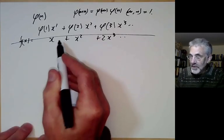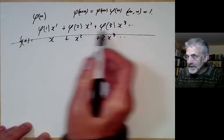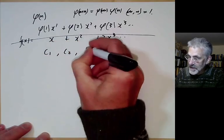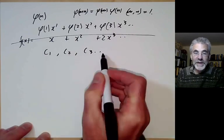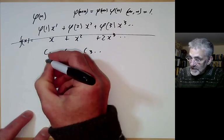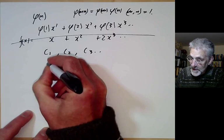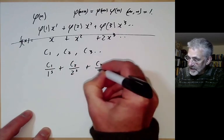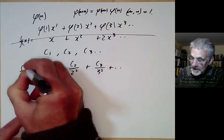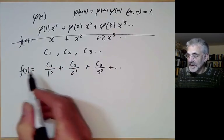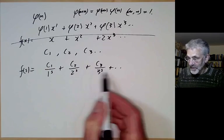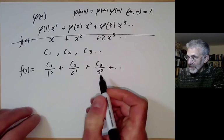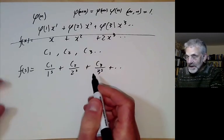However, power series are not the only form of generating function. We can form a Dirichlet series. If we've got a sequence c1, c2, c3, …, instead of forming a power series, it often turns out to be a good idea to form the series c1/1^s + c2/2^s + c3/3^s + …, where s is traditionally the variable used for a Dirichlet series. This sometimes works much better for arithmetical functions.